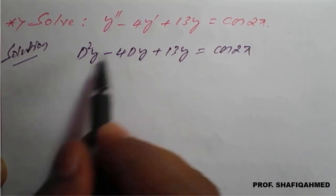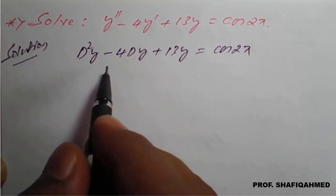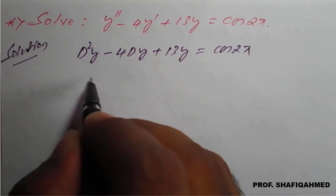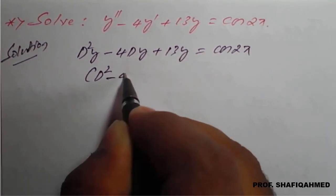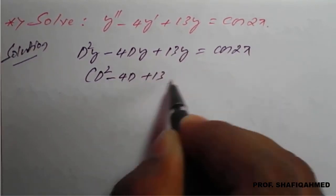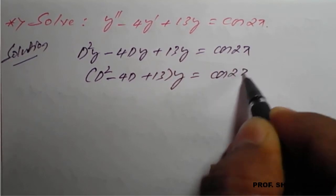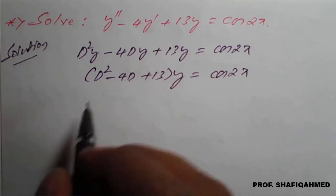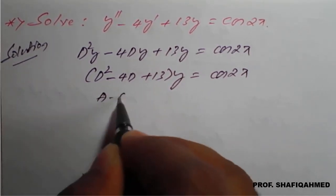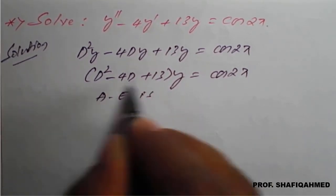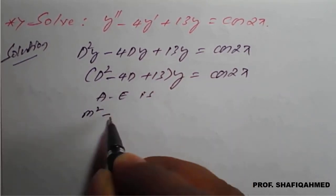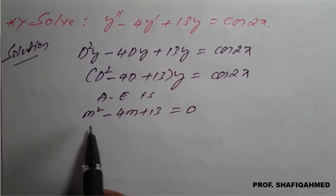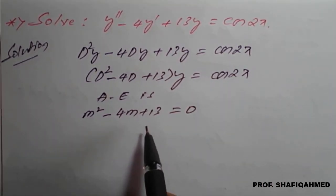We have to simplify the left hand side to get yc, the complementary function. Taking y common from the left hand side, it becomes d squared minus 4d plus 13 of y equal to cos of 2x. From this bracket we get our roots. The auxiliary equation is: convert d in terms of m, giving m squared minus 4m plus 13 equal to 0.